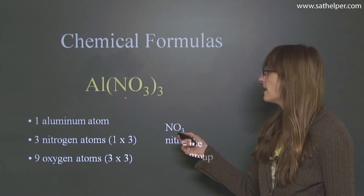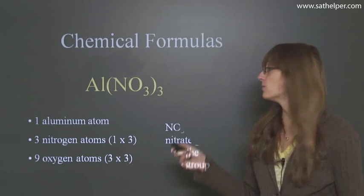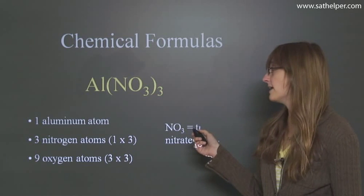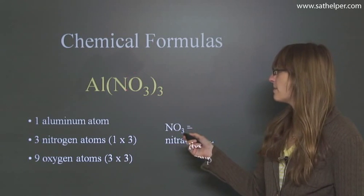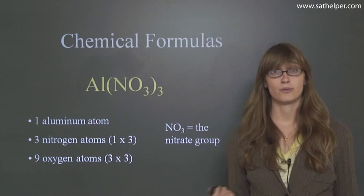Then we have this nitrogen here. So here it looks like we have one nitrogen atom because there's nothing there. But we have to remember that we have to multiply it by this 3 outside. So you're going to multiply this 3 by the 1 to get 3 nitrogen atoms because 1 times 3 is 3.